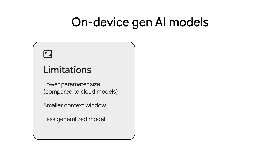However, on-device GenAI also has some limitations to keep in mind. Devices typically possess less computational power than cloud servers, so the models intended for on-device are smaller, and thus results may have lower resolution. We're generally looking at between 2 to 3 billion parameters, almost an order of magnitude smaller than cloud-based equivalents. Similarly, the context window will also likely be smaller, and the model will be less generalized.